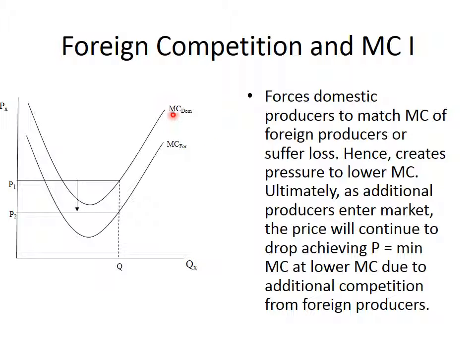Our domestic producer produces along its marginal cost curve. You can see it's much higher than the foreign marginal cost. As a result, when the foreign company begins to produce in our market, they can do so at a much lower price. As the price drops, they continue to make a profit, but once the price drops below our minimum marginal cost, we operate at a loss.